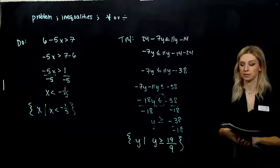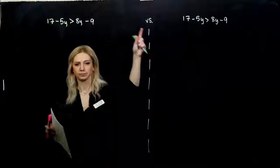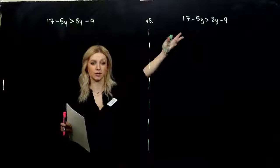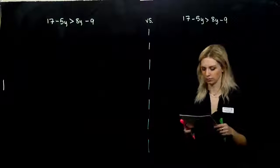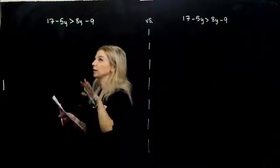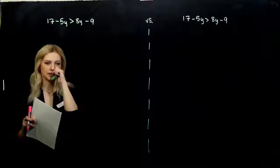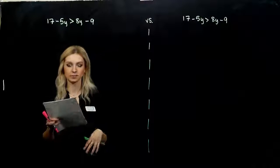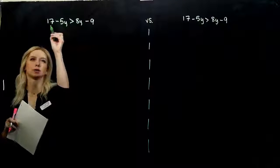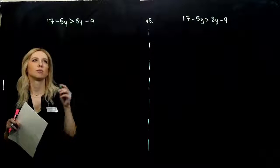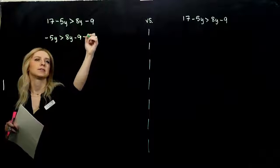On the next page you'll see the exact same inequality sentence written in two different spots. We're going to solve these in two different ways and talk about the differences between the two. So we're going to take that first one and attack it like we've normally been doing — get my y's together, get my constants together, and report it in set notation. I'm trying to get the y's on their own, so I'm going to go ahead and subtract 17 from both sides. So minus 5y is greater than 8y minus 9 minus 17.